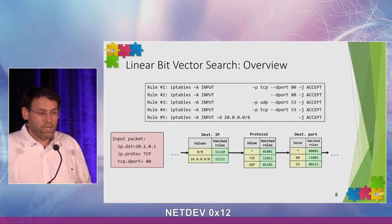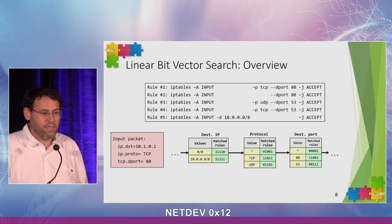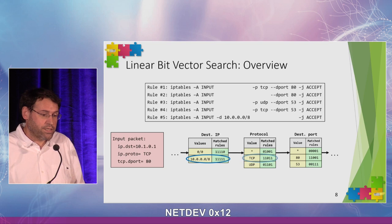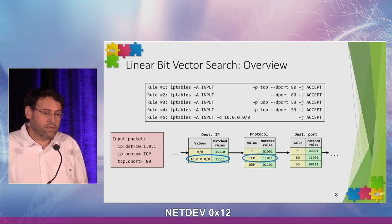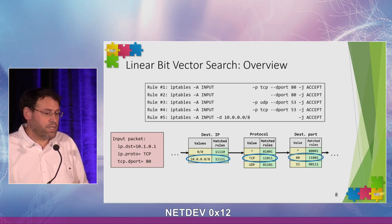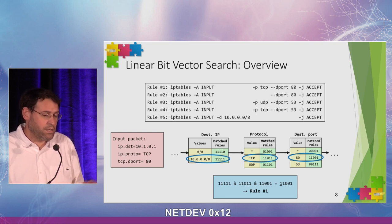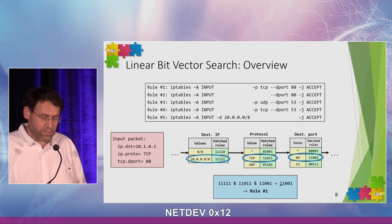For example, if a packet comes with IP destination 10.0.0.1, protocol TCP, and port 80: in the first step it matches the destination IP, in the second step it matches TCP, in the third step it matches port 80. A bitwise AND across the bit vectors shows that rule number one is the one that matches this packet.